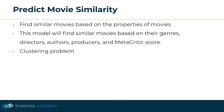Finding similar movies based on the properties of movies is our next machine learning model example. This model will identify similar movies based on their genres, directors, authors, producers, and metacritic score, and is basically considered a clustering problem. Clustering is the task of grouping a set of objects such that objects in the same group — called a cluster — are more similar to each other than those in other groups.